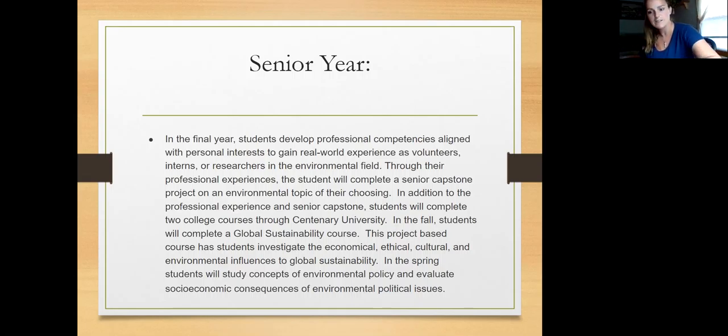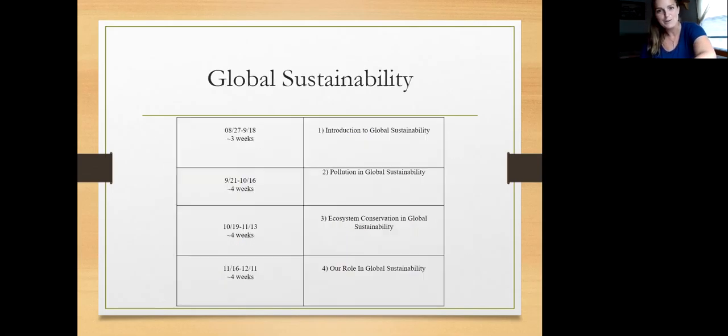Let's just look at the syllabus for all three courses. In the fall is the Global Sustainability course. It is following Centenary's Global Sustainability course. I've outlined it here. It could change, but these are the main topics. We have four main topics, and just the timing of them may change dependent on the students. We start with introducing Global Sustainability and what that means. That'll take us about three weeks. Then we go into pollution and Global Sustainability.